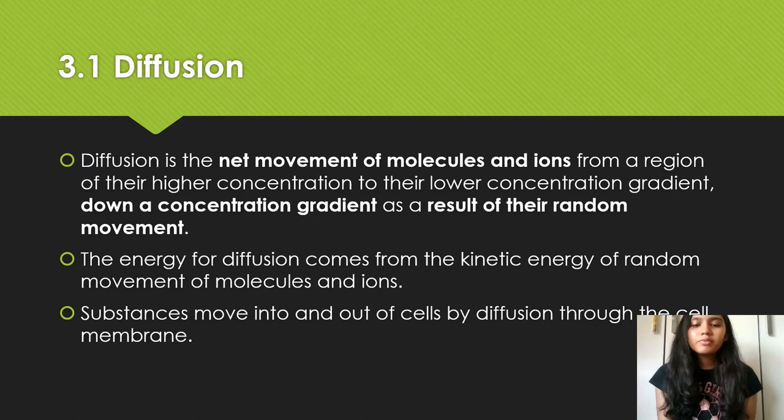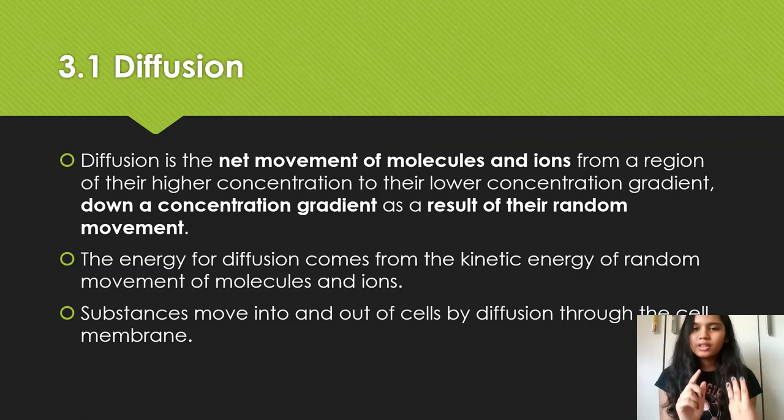So movement in and out of cells. Firstly, you need to know there are three ways that substances move in and out of cells. One is diffusion, osmosis, and active transport. So there are just three main concepts in this chapter and you will learn each of them in detail.